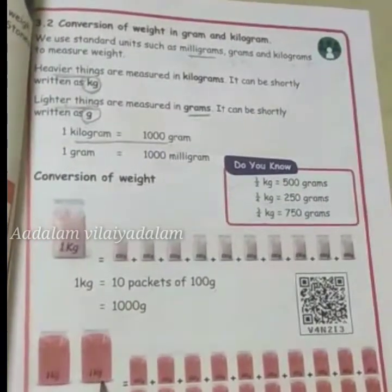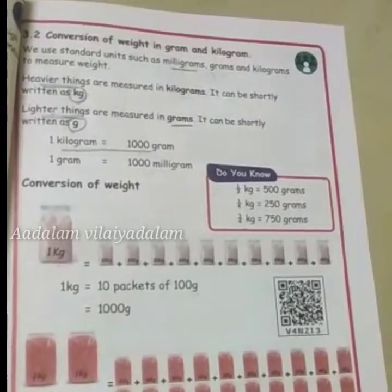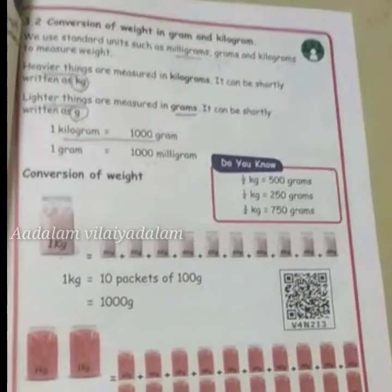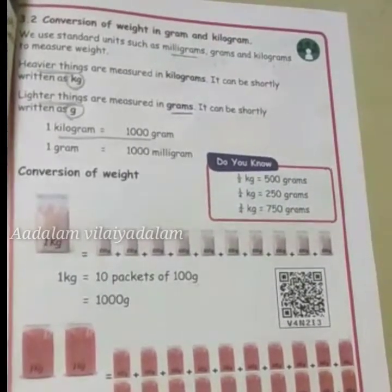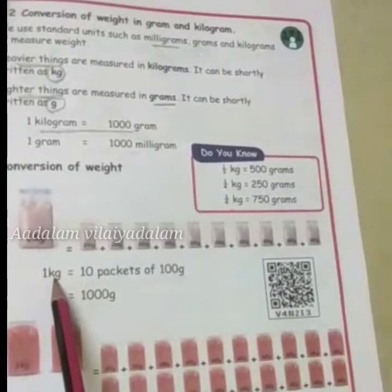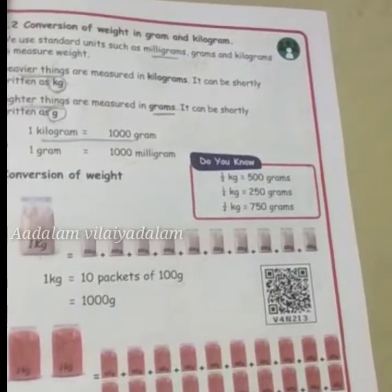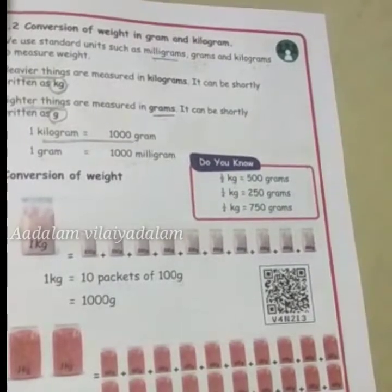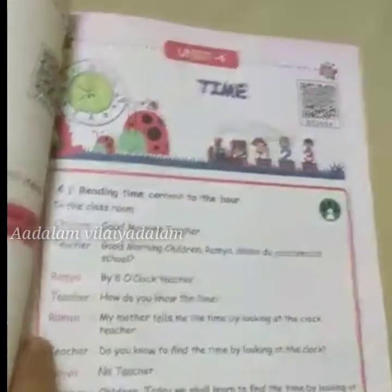Similarly, 2 kg equals two sets of ten packets, so 2 kg equals 2000 grams. Now the question asks: how many 100-gram packets are needed to fill 3 kg? 1 kg = 10 packets, 2 kg = 20 packets, so 3 kg equals 30 packets. Yes, that is correct — 30 packets!